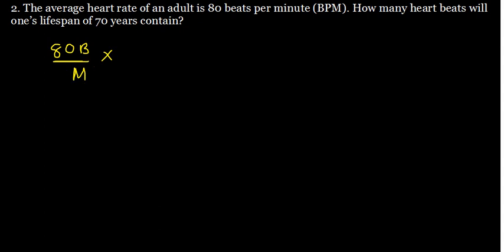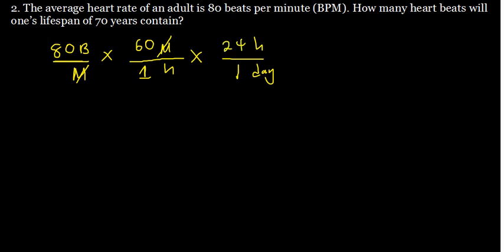We have a minute on the bottom, so I'm going to put a minute on top. From minutes we can go to hours — I'll put an hour down, and we know that in one hour we have 60 minutes, so the minutes cancel. Now I don't want hours either, so I convert hours to days: I put hour on top and a day down, and in one day we have 24 hours, so the hours cancel. Then I convert days to weeks: day on top, week down, and in one week we have seven days, so the days cancel.